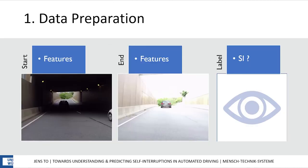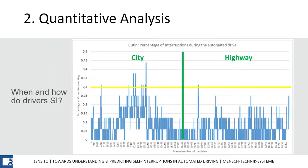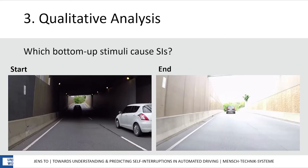The results are feature vectors with information of the start and end image of a sequence and the corresponding self-interruption label. I analyzed those data quantitatively and found out that in a 12-minute drive, there were 7 events in the city where at least 30% of the drivers self-interrupted and only one on the highway. In the qualitative analysis, I found out which stimuli might cause them.